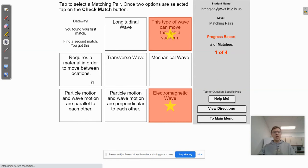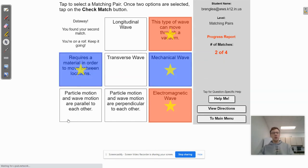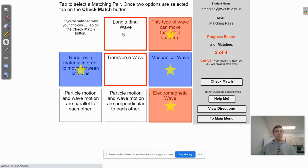So let's go ahead and find the opposite to that that matches up with mechanical wave, which would be this one right here: requires a material in order to move between the locations. Right. So that's saying it requires a medium. There has to be something there for it to move through. So we'll check those. Great.